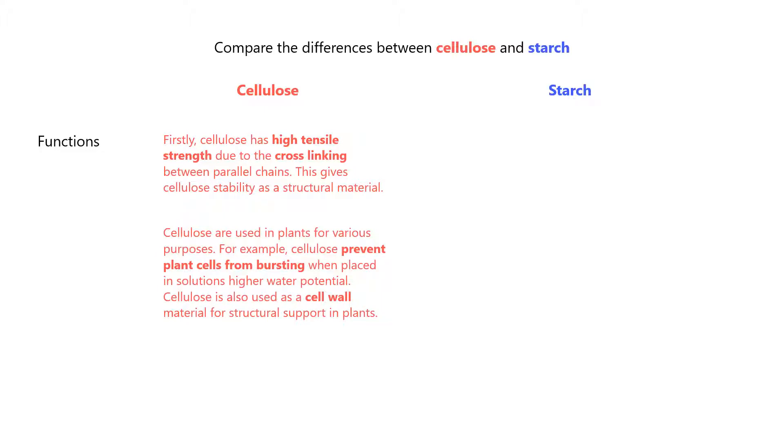Cellulose is used in plants for various purposes. For example, cellulose prevents plant cells from bursting when placed in solutions with higher water potential. Cellulose is also used as a cell wall material for structural support in plants.